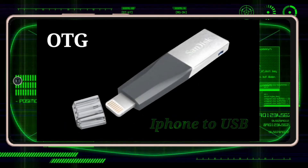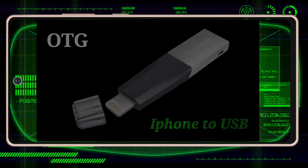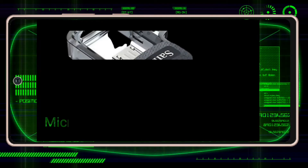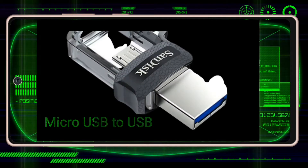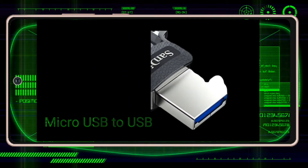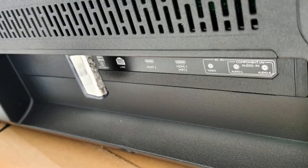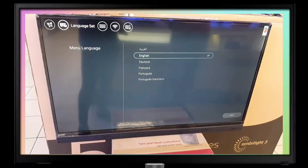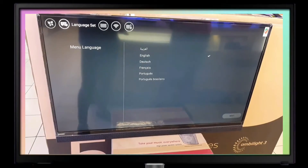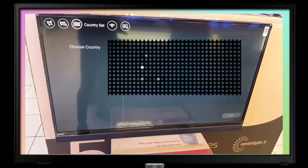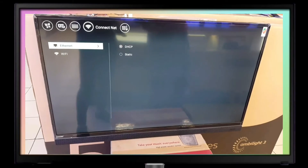I'm using different OTG adapters: iPhone to USB, micro USB to USB, and USB Type-C to USB. Once you transfer the files onto the USB, you can insert the USB into the USB port of the TV.